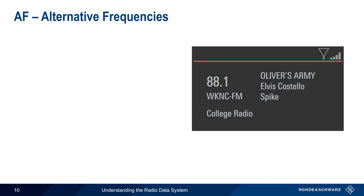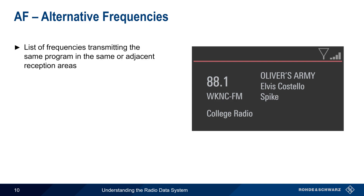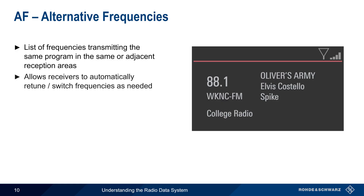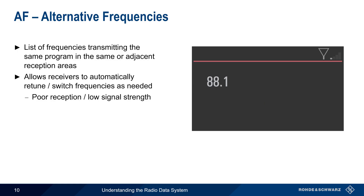The Alternative Frequencies element is a list of frequencies transmitting the same program in the same or adjacent areas. This list allows the receiver to automatically retune or switch frequencies when signal reception is poor, or when signal strength is low.